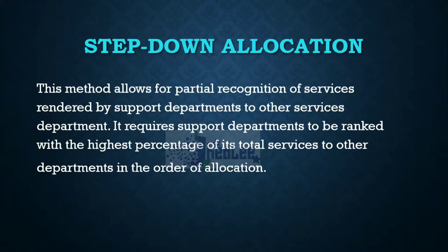For example, if you have three departments and one is providing 20% of service to another, one is providing 25% to another, and one is providing 30% to another, the highest percentage is the one with 30%. So you will start your allocation with the one providing 30%, then 25%, then 20%. With this method, the last stage employs principles from the direct allocation method.